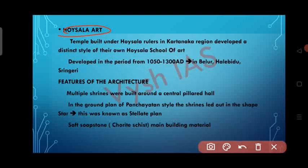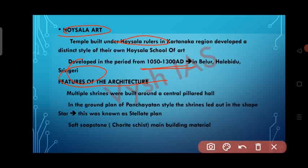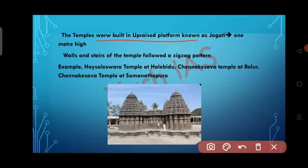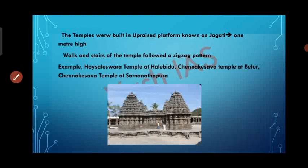The temples built under the Hoysala rulers in the Karnataka region developed a distinct Hoysala school of art. It developed during the period of 1050 to 1300 AD in Belur, Halebidu and Shravanabelagola. Features include: multiple shrines built around a central pillared hall; in the Panchayatan ground plan, the shrines are laid out in the shape of a star (known as the stellate plan); the major building material was soft soapstone; temples built on a prized platform known as Jagati (one metre high); and walls and stairs following a zigzag pattern. Examples: Hoysaleshwara Temple at Halebidu, Chennakeshava Temple at Belur, and Chennakeshava Temple at Somanathapura.